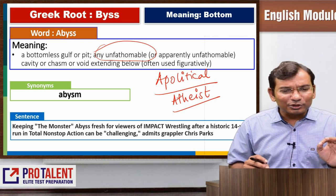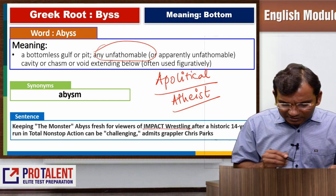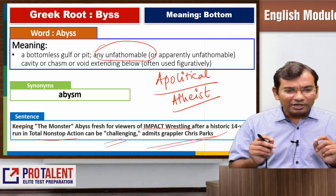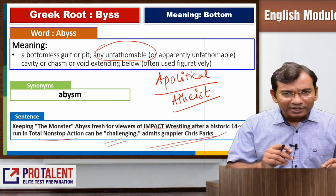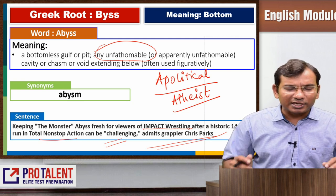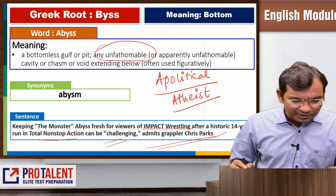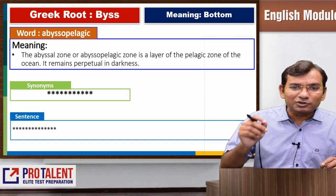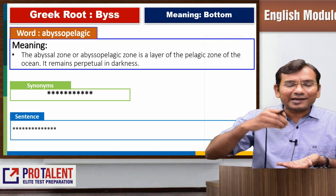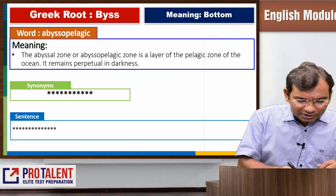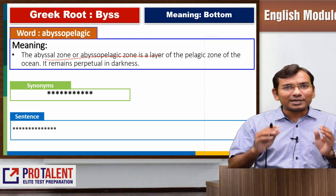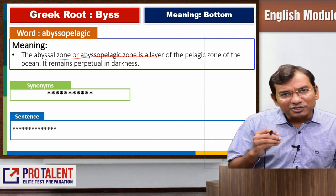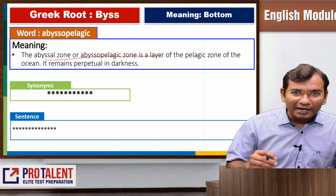A sentence is given here: 'Keeping the monster Abyss fresh for viewers of Impact Wrestling after the historic 14-year run in Total Non-Stop Action can be challenging, admits the grappler Chris Parks.' This is related to a kind of fight — there is a monster, and keeping that abyss fresh was the challenge. Then another word is abyssopelagic, which is a zone in the ocean called the abyssal zone where there is water but light cannot go — it is perpetual darkness. Abysmal performance means the performance which is very bad — it goes to the bottom.